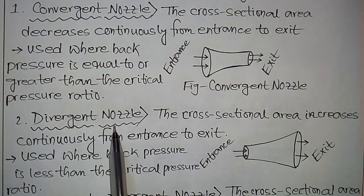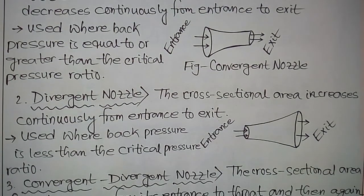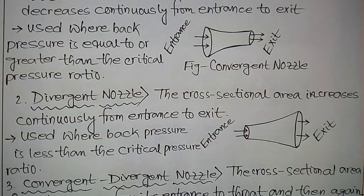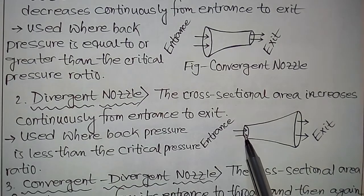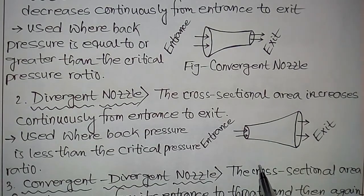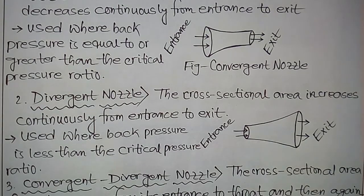Next, the divergent nozzle. In the case of a divergent nozzle, the cross-sectional area increases continuously from entrance to exit, as shown in the figure. It is used where back pressure is less than the critical pressure ratio. It is also called the inverse of the convergent nozzle.